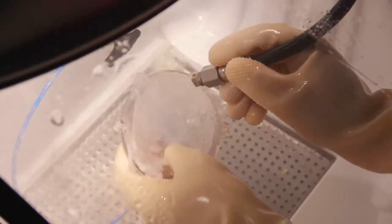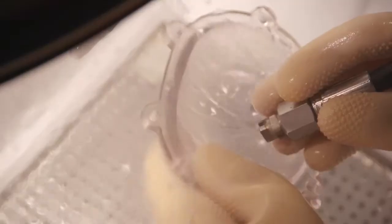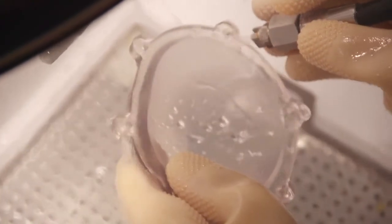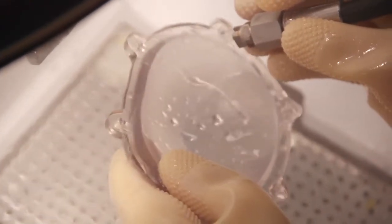For most models, the most efficient way to remove support material is to use a cleaning unit that employs high-pressure water jetting. Be careful not to damage delicate models when cleaning with a water jet.